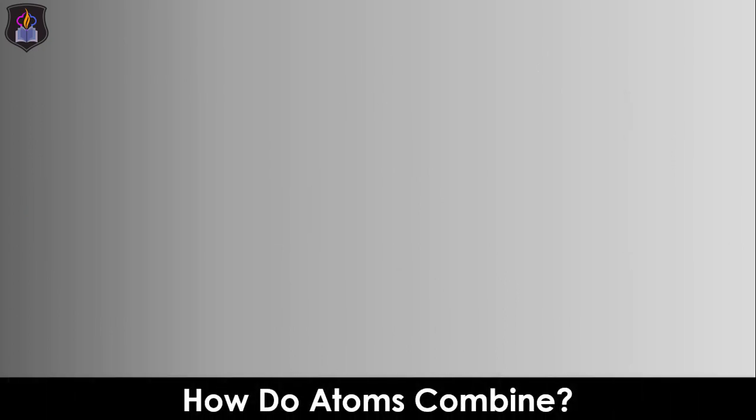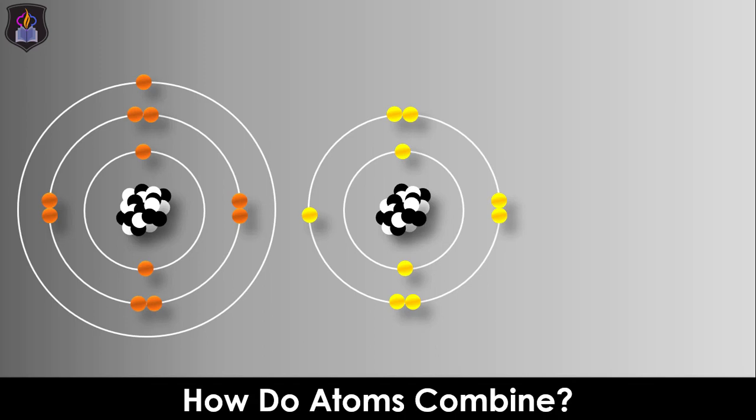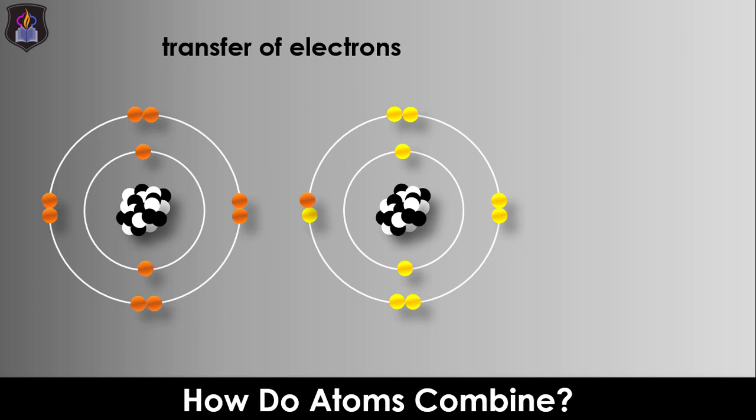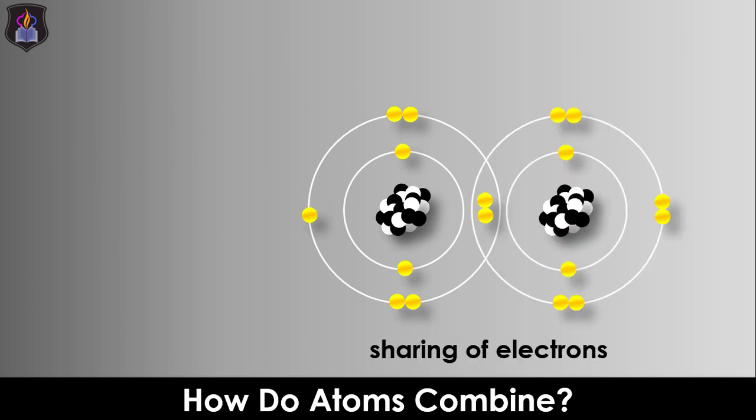Now to our next question. Atoms combine with one another in two major ways. They can achieve that by the transfer of electrons or they can do so through the sharing of electrons. Let's now study in details how atoms combine through electron transfer using the formation of sodium chloride, magnesium oxide and magnesium chloride.